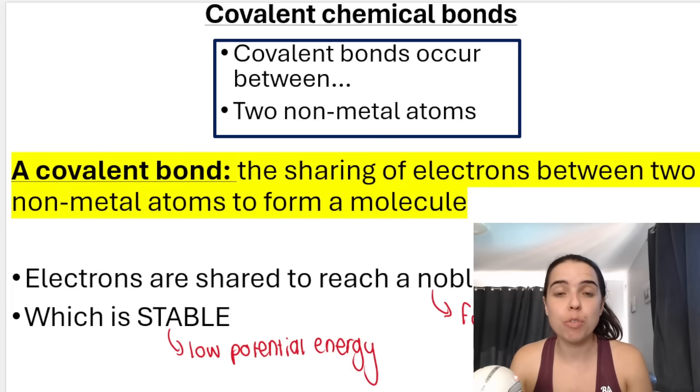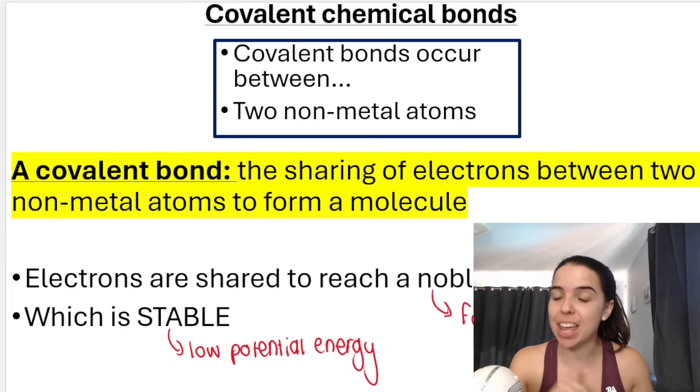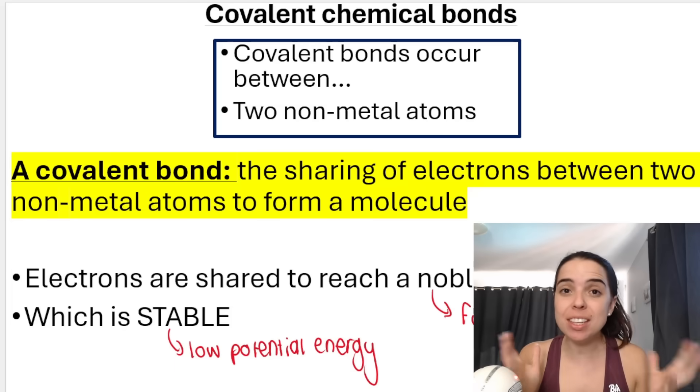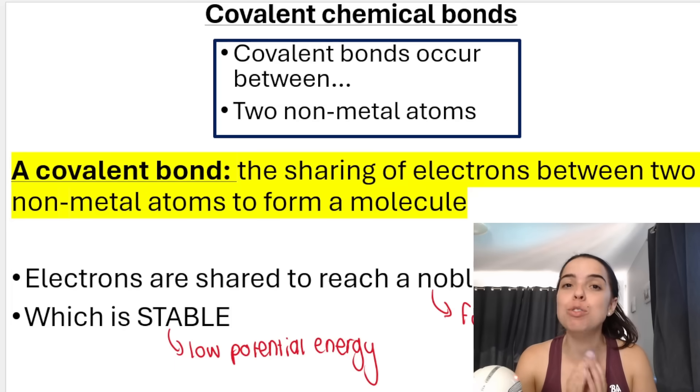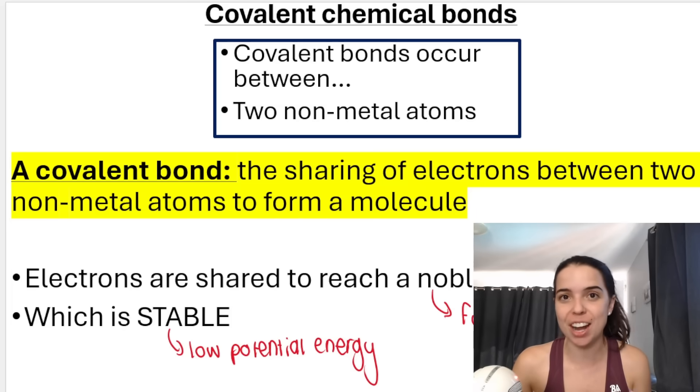Hello, in today's video we're going to be looking at Lewis dot diagrams and chemical bonding. It's absolutely essential that you know how to draw a Lewis dot diagram for covalently bonded molecules or compounds. In the previous video we went over what a chemical bond is and why a chemical bond forms, so if you missed that video check out the link in the description box below. In this video we're going to focus on how to represent covalent chemical bonds using a Lewis dot diagram.